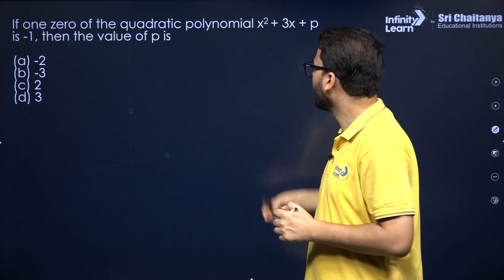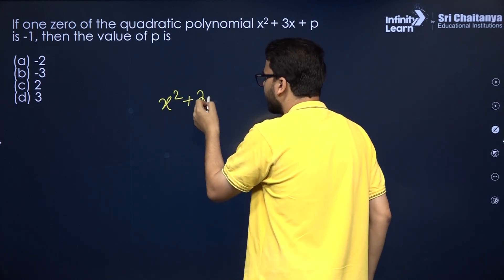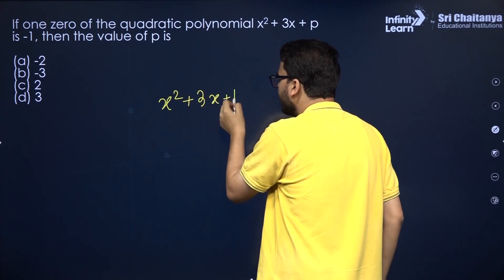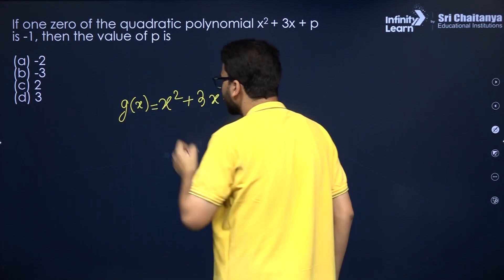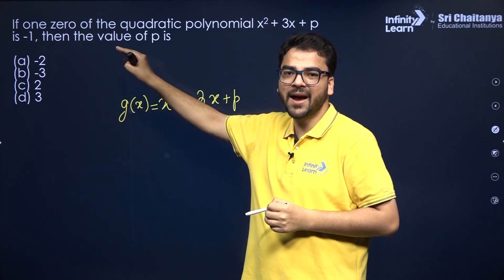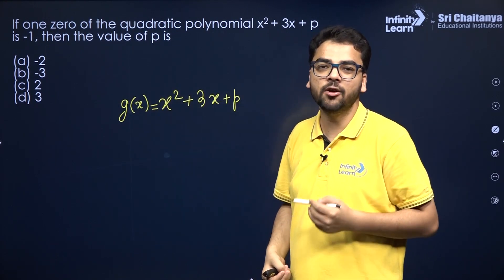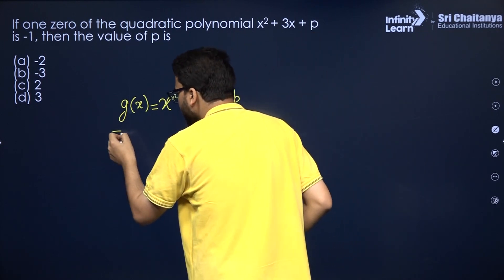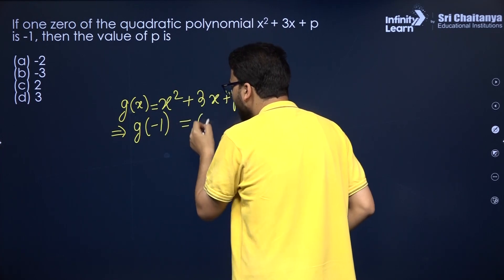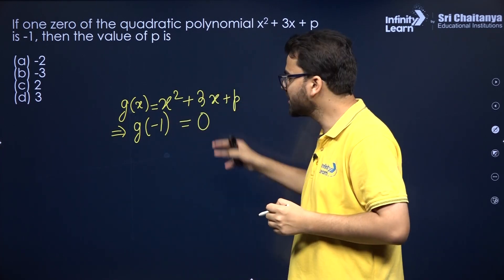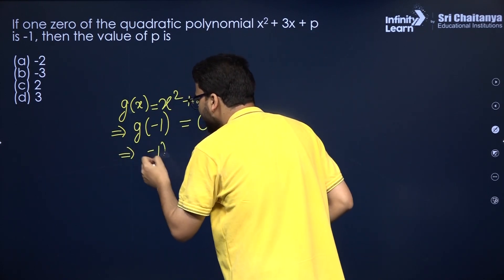You have the quadratic polynomial x² + 3x + p. Let's call it g(x). It is given that minus 1 is a zero of this polynomial. The meaning of a zero of a polynomial is that if you put the value of the variable equal to minus 1 in the polynomial, the value of the polynomial will itself become equal to 0. So just put x = −1 in the polynomial.